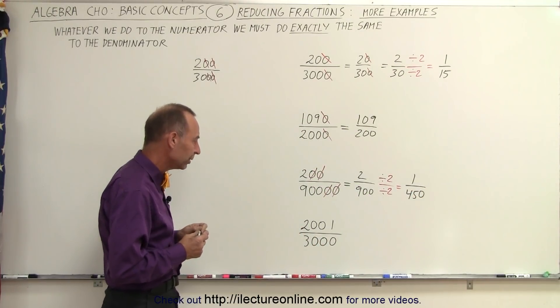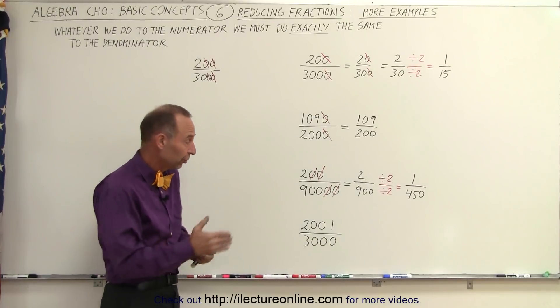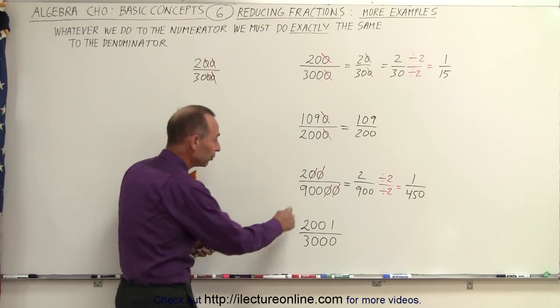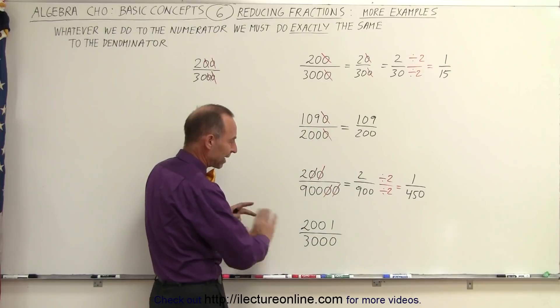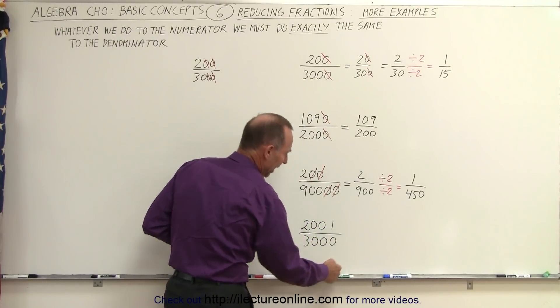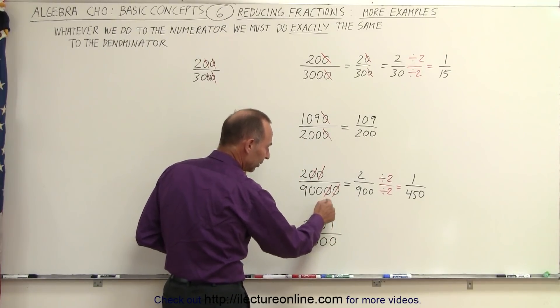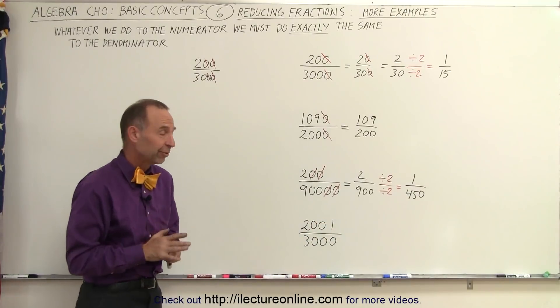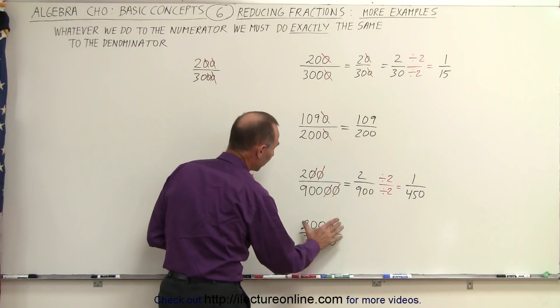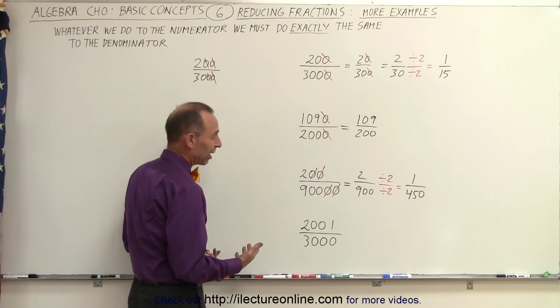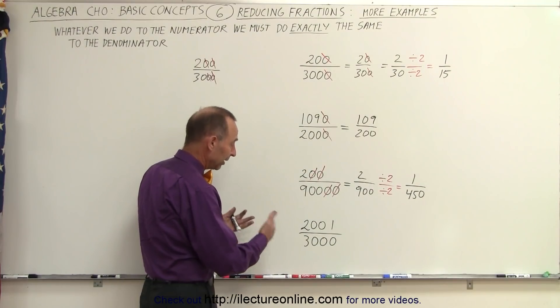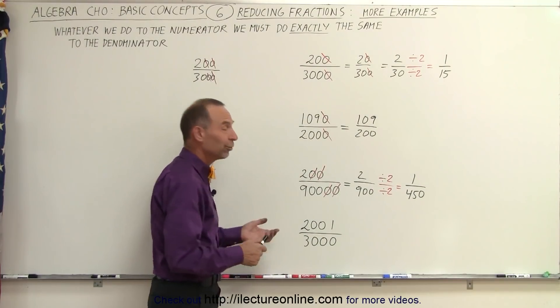So now taking a look at the last one here, you'd be very tempted to start crossing out 0s. You have two 0s here, you have two 0s there, but you cannot do that. You have to start from the back, and since the very back is not a 0, both of them are not divisible by 10. The denominator is, but not the numerator. And 2001 looks like it's a prime number. That's as reduced as you can get it.